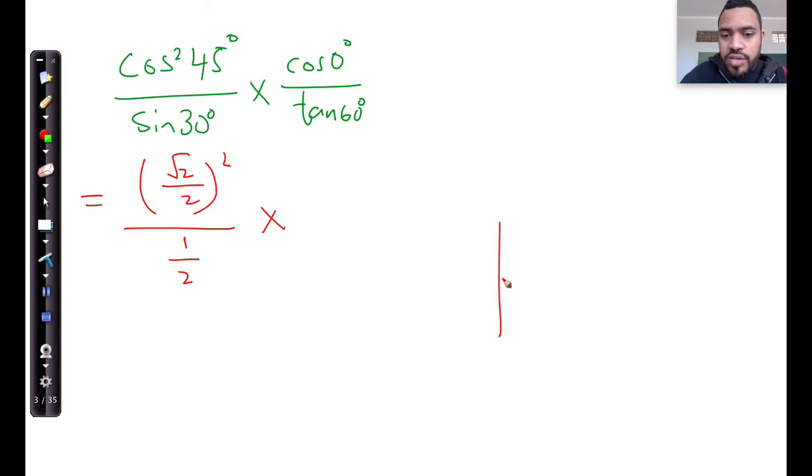Cos of 0 is a special angle according to the cos graph. Cos of 0 is equal to 1, so I'm going to put that in as 1. And divided by tan of 60—tan of 60 degrees is going to be root 3. You can do them on the calculator for now until you've memorized what each of these special angles are.